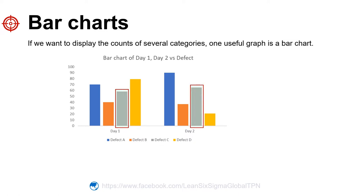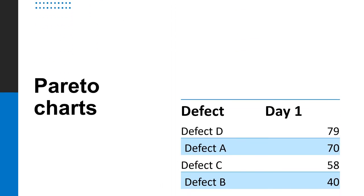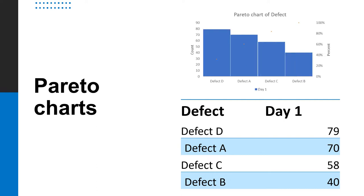Because the height of the bar indicates the count, we can compare the frequency of the defects at a glance. For example, in day two, defect A is clearly the most common issue, and defect E is the least common. Often we want to easily see which category occurs most or least frequently.